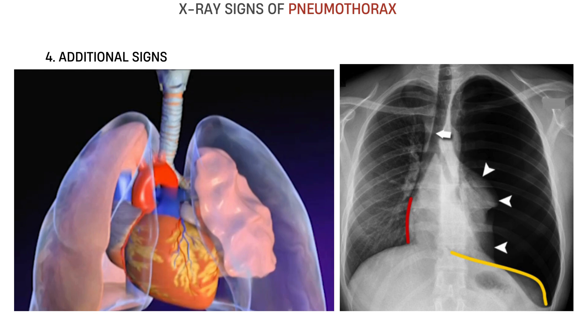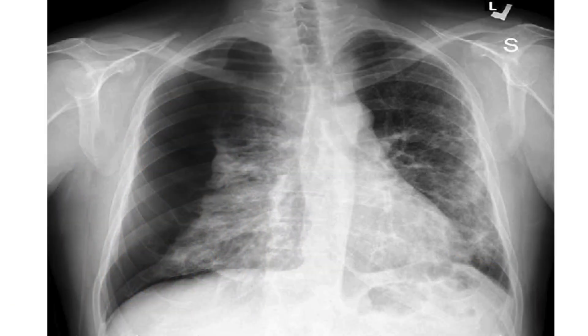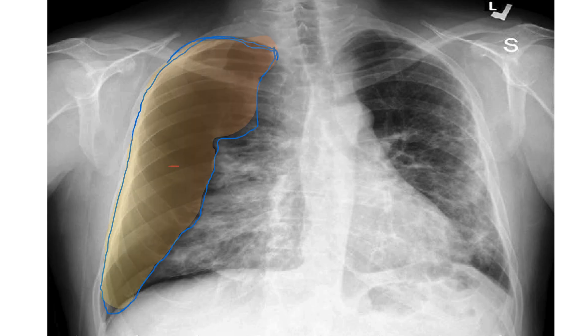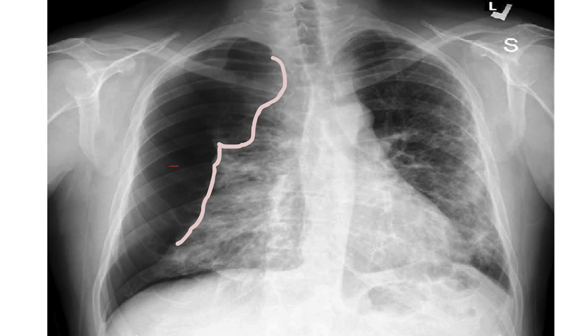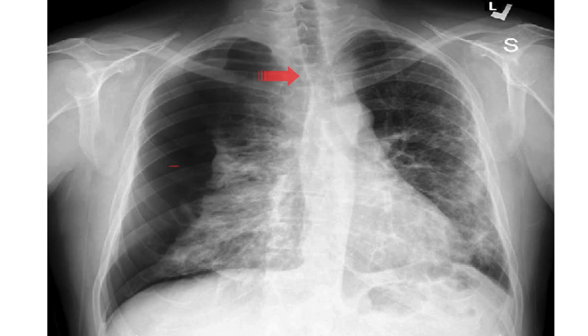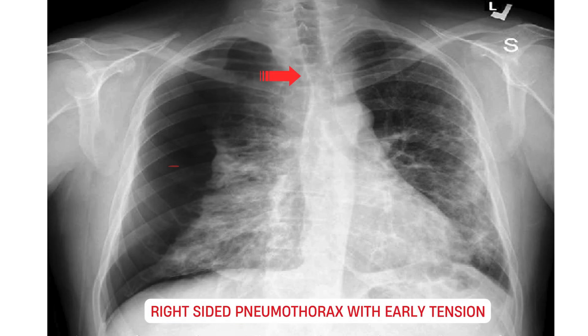Let's apply what we just learned to a real case. Look at the right lung field: no lung markings in the upper lateral zone, a visible pleural line — this is the collapsed lung edge — air beyond the line, completely black, and slight mediastinal shift to the left. Diagnosis: right-sided pneumothorax with early tension features.